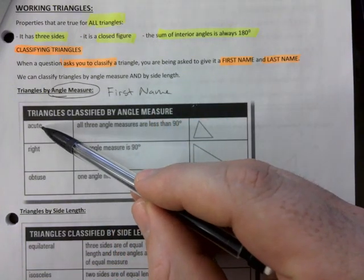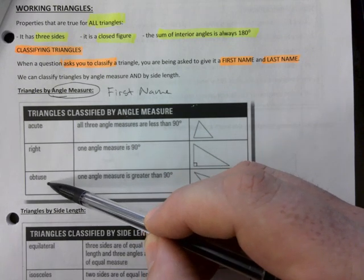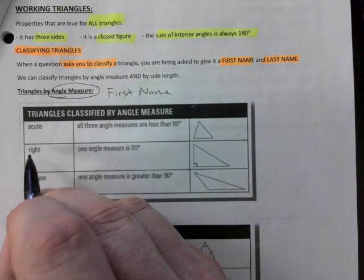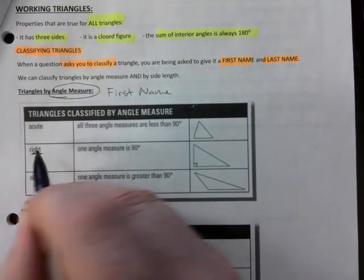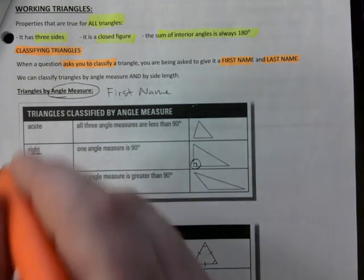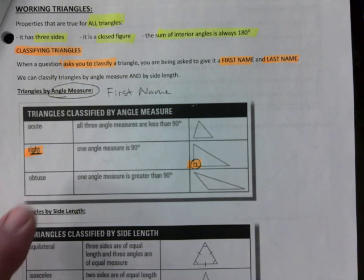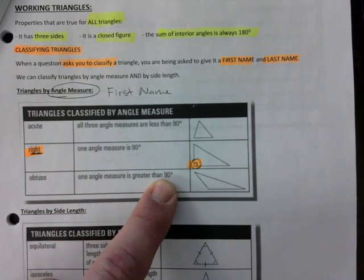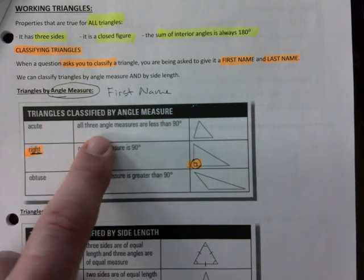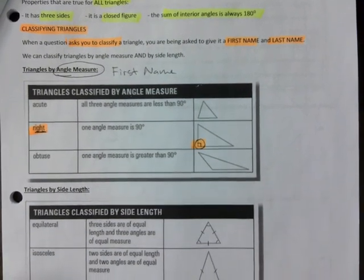By angle measure — that's the first name — there are three options: acute, right, or obtuse. Right is easy to identify because it has the 90-degree angle. Obtuse means one angle is greater than 90. Acute means all angles are less than 90. That's the first name.